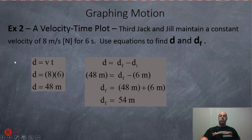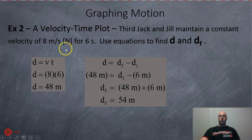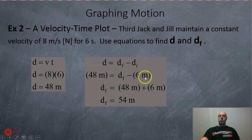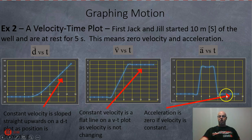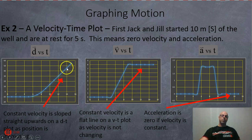For the third part of the trip, they have a constant velocity of eight meters per second north for six seconds. Displacement is eight times six — 48 meters. They start off at six meters north, so their final position is 54 meters north. On the velocity-time graph they stay at eight meters per second the whole interval. There's no acceleration since velocity is constant, and the position-time graph shows a straight sloped line for constant velocity.